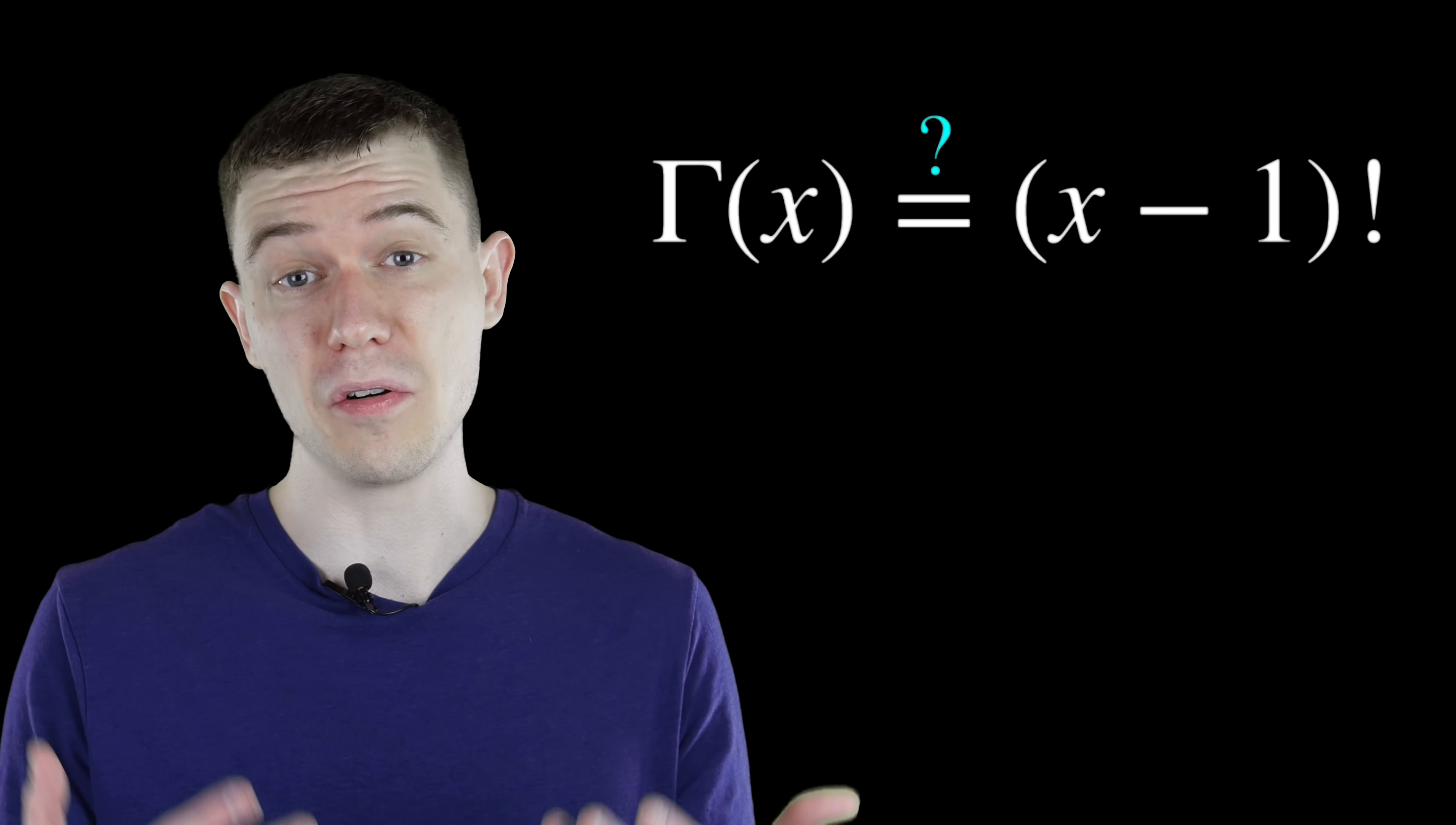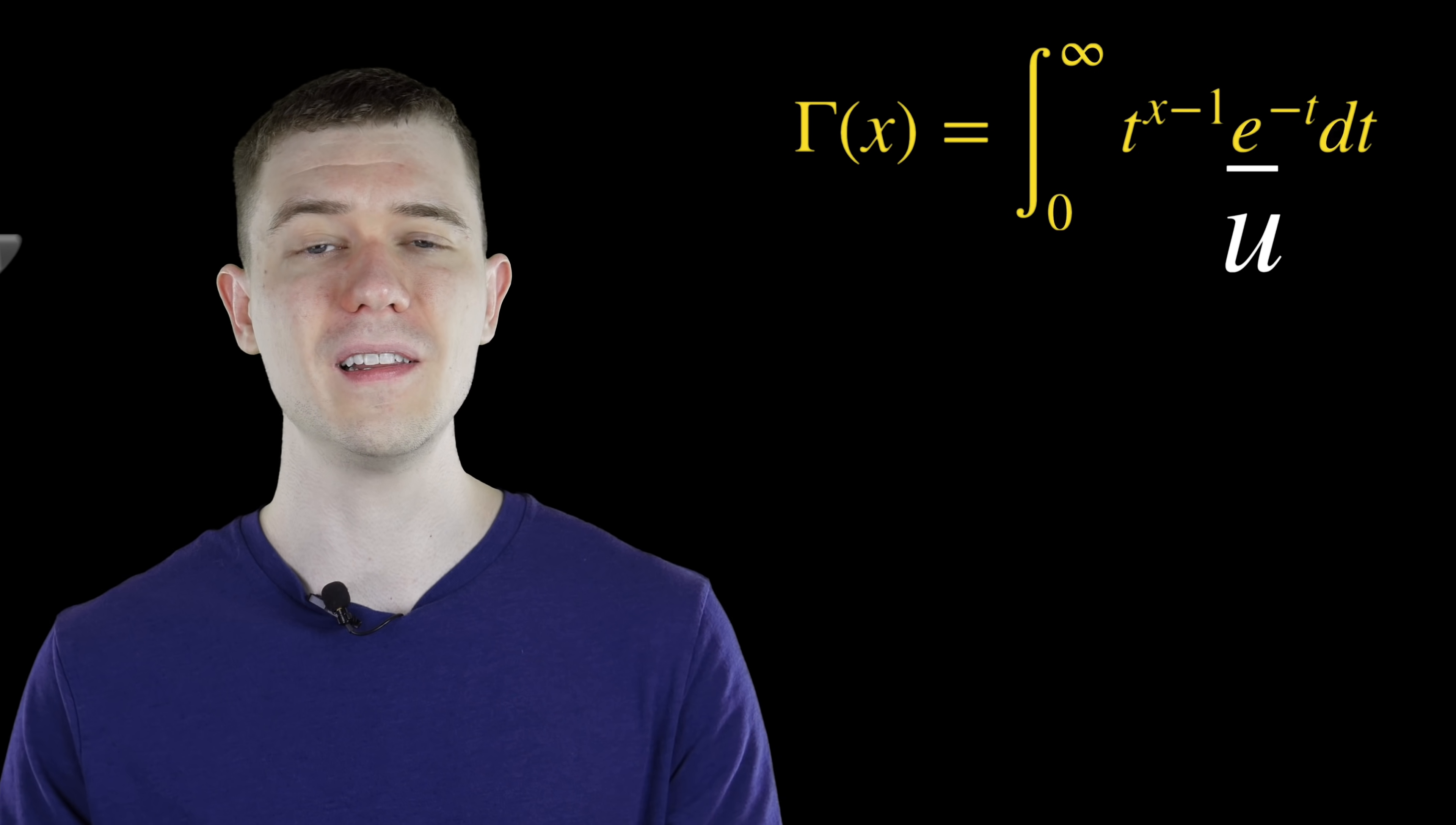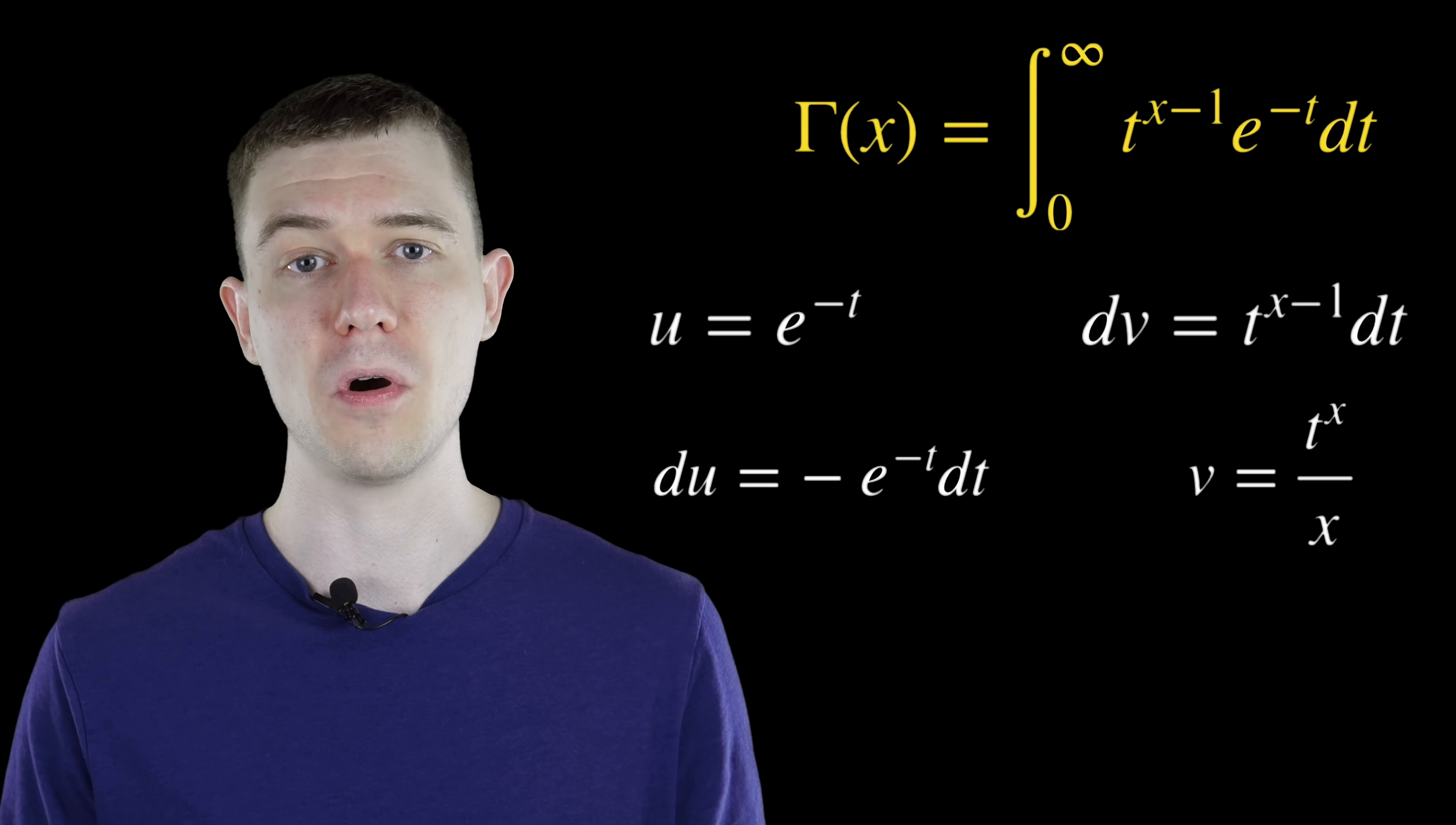But maybe you're not quite convinced yet. We still need this general function to be x minus 1 factorial. What happens if we try to apply integration by parts here right off the bat? Let's let u be the e part. Let's let dv be the t part. So we antiderive dv. We take the derivative of u and then apply integration by parts.